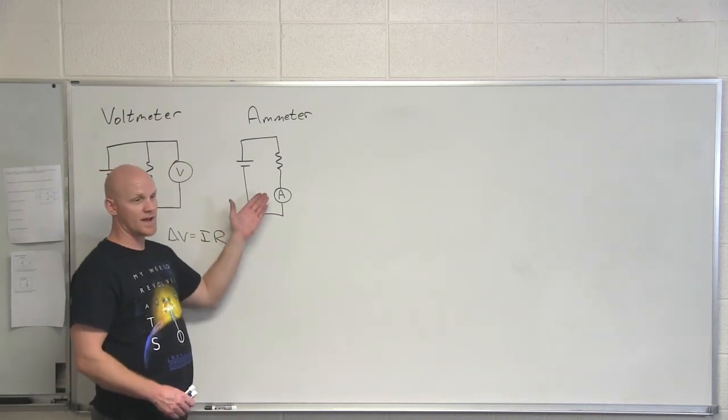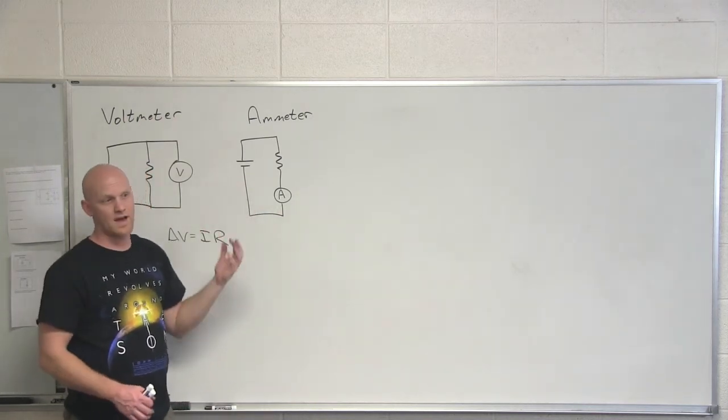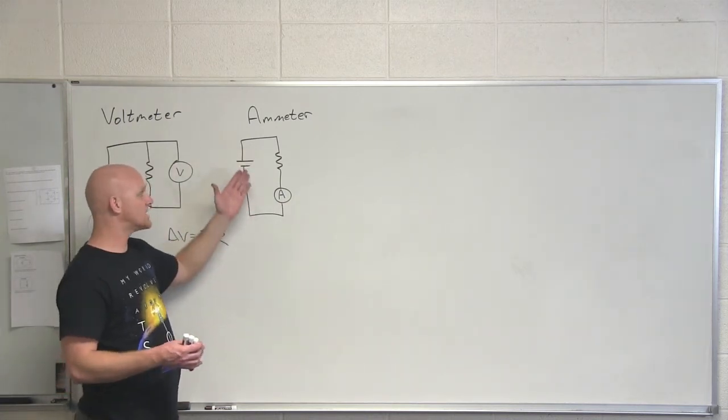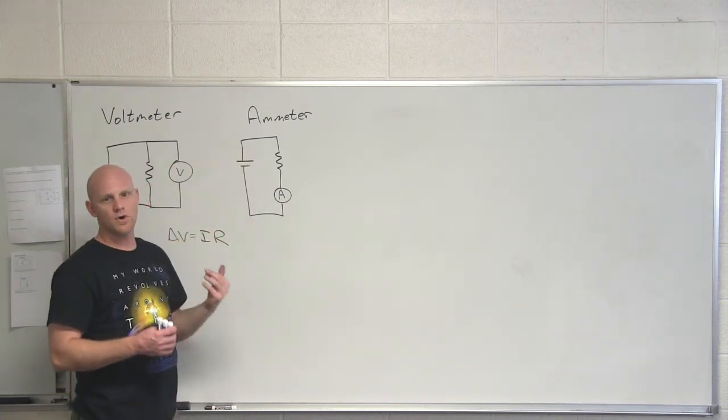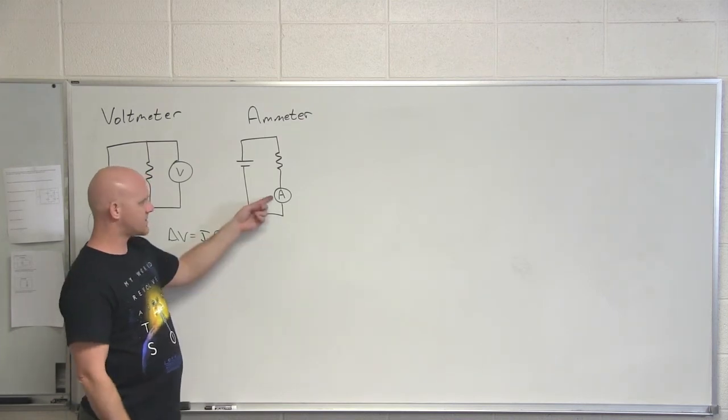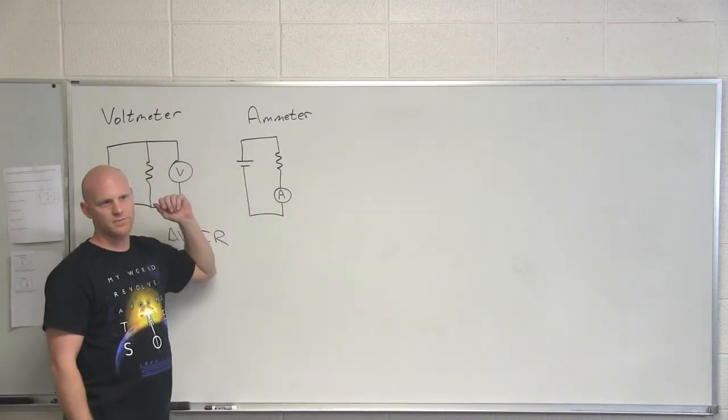And in fact, an ideal ammeter would have a resistance of zero, and that way it doesn't affect the circuit at all. Well, again, the truth is it's really going to have some small resistance. So I'll measure the current flowing through here and know that it's the same through my resistor.